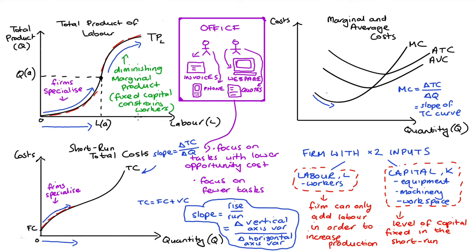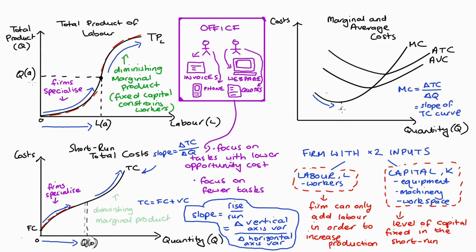Beyond this point, the fixed level of capital starts to constrain worker productivity — what we call diminishing marginal product. Workers may have to line up to use equipment, wait for others to finish, or share capital in other ways, reducing their productivity. In terms of total cost, when diminishing marginal product sets in, additional units become more expensive to produce and the TC curve begins increasing at an increasing rate. This inflection in the TC curve occurs at quantity Qa, the same Qa shown on the TPL curve.